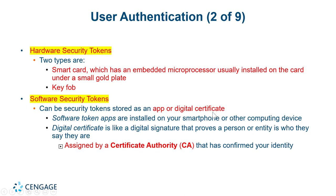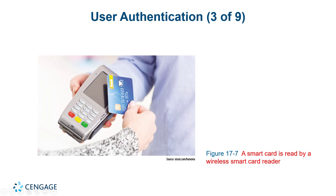Software security tokens: the most common is a digital certificate for a website, where the website proves it is authentic and has been approved by a certificate authority. There have been problems in the past where certificate authorities approved certificates for non-trustworthy people trying to emulate or claim to be an organization — creating fraudulent websites. The basic security of 'this really is Bank of America' or 'this really is Microsoft' is only as safe as the certificate authority that website is using.